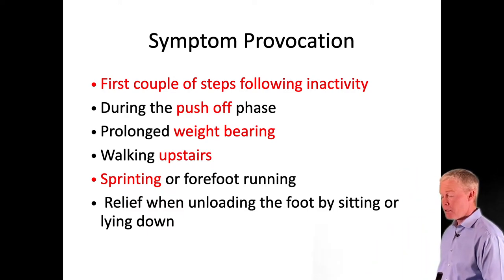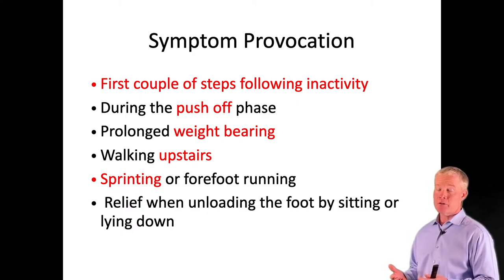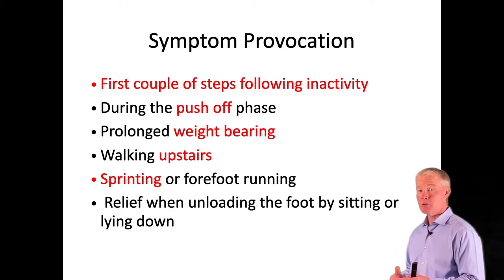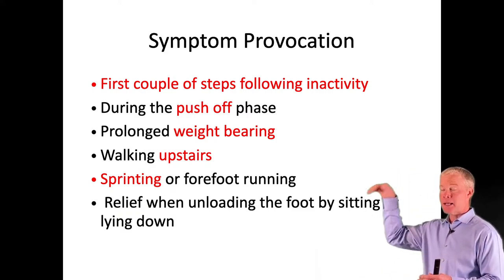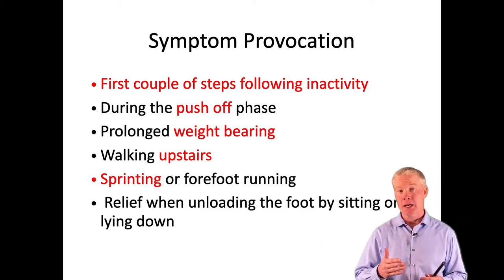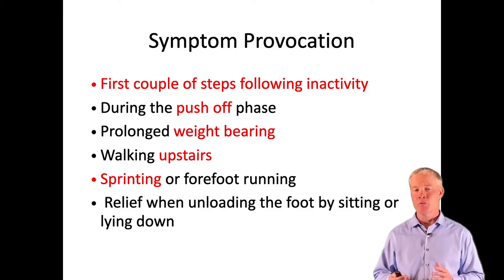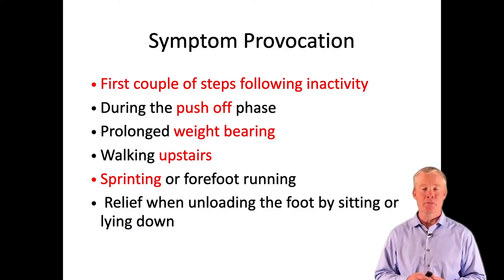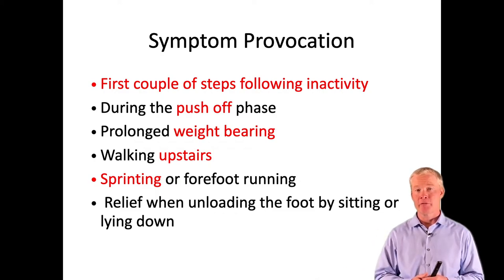Our normal gait cycle is heel to toe, but many runners have adapted a forefoot pattern. There's greater shock absorption with forefoot running; you can use the kinetic energy stored in the gastroc and soleus to propel forward, spending less time going up and more time going forward. However, there is absolutely greater strain on the posterior chain — the gastroc, soleus, Achilles tendon, and plantar fascia. Patients who transition from hindfoot to forefoot running are great candidates to develop posterior chain problems.